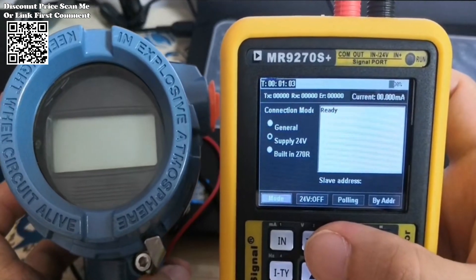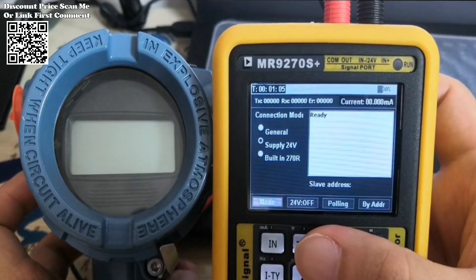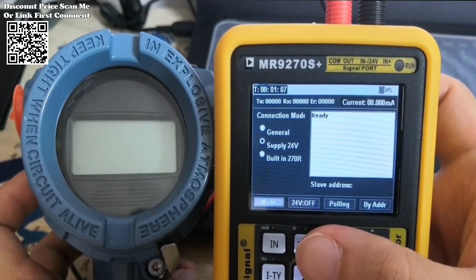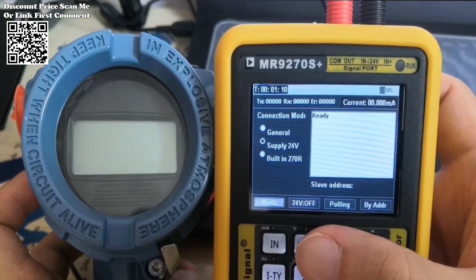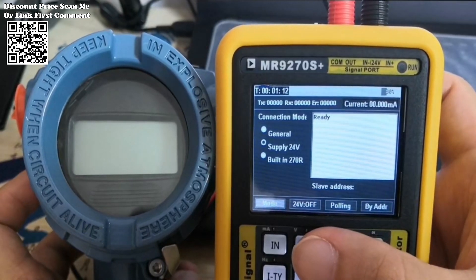That is, 4 milliampere corresponds to 0, 12 milliampere corresponds to 50, and 20 milliampere corresponds to 100. This range can be modified through parameters.